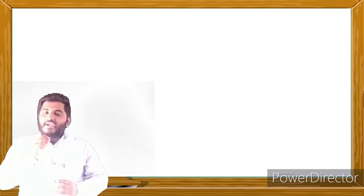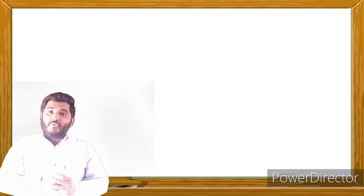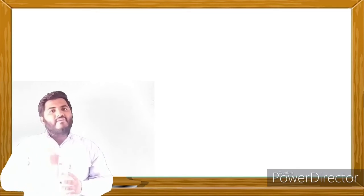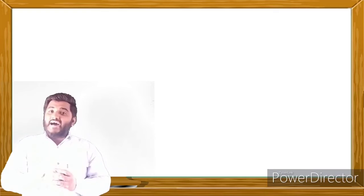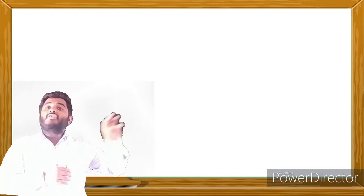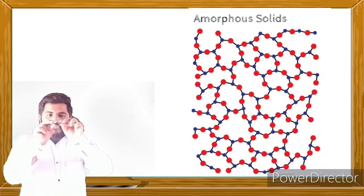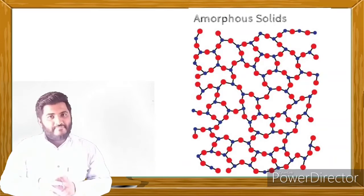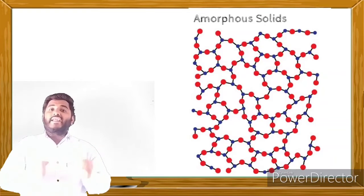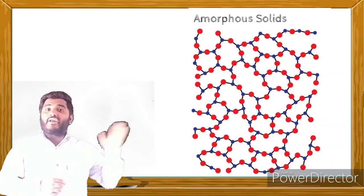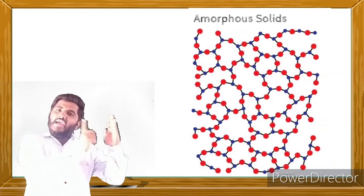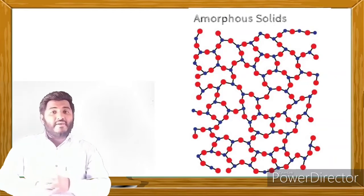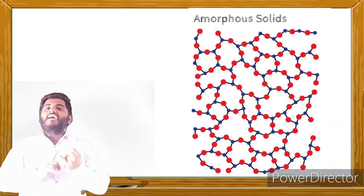Now, amorphous solids. In crystalline solids, particles have a long-range orderly arrangement. In amorphous solids, the constituent particles do not have long-range order — they have only short-range order. Up to a certain point, they have orderly arrangement, but after that the order breaks into a random arrangement. Therefore, amorphous solids do not have a definite geometrical shape.